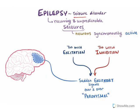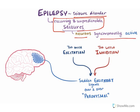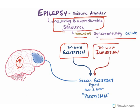Epilepsy is a seizure disorder where you have recurring and unpredictable seizure occurrence. In seizures, neurons are synchronously active or firing — meaning continuous depolarization is what is causing seizures. Epilepsy is because of increased activity of neurons. Either it is because of too much excitation or too little inhibition.